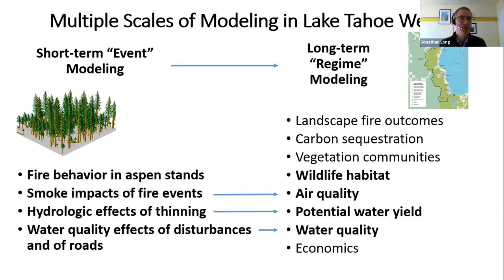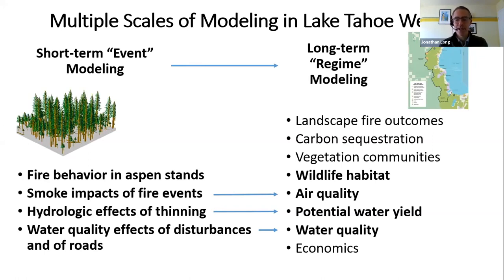Our modeling simulated different directions that managers could go, like using a compass, and then we report on the expected outcomes from following that path. Managers will have the ability to meander their path to promote more desirable objectives based on conditions as they actually unfurl. This approach helps to evaluate resilience more directly by seeing how the system is likely to respond to disturbances rather than just assuming that a particular condition will be unresilient or not.